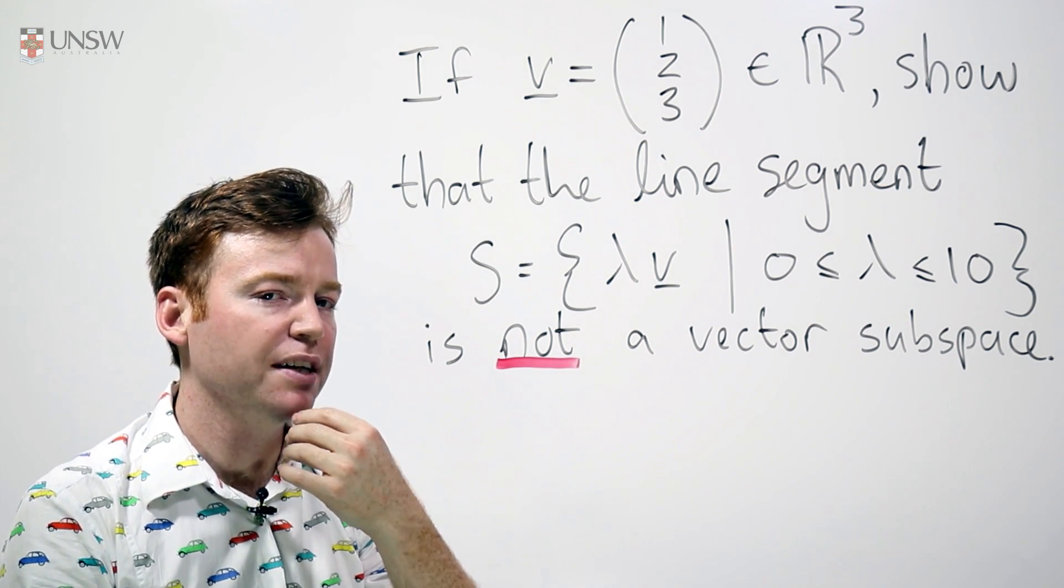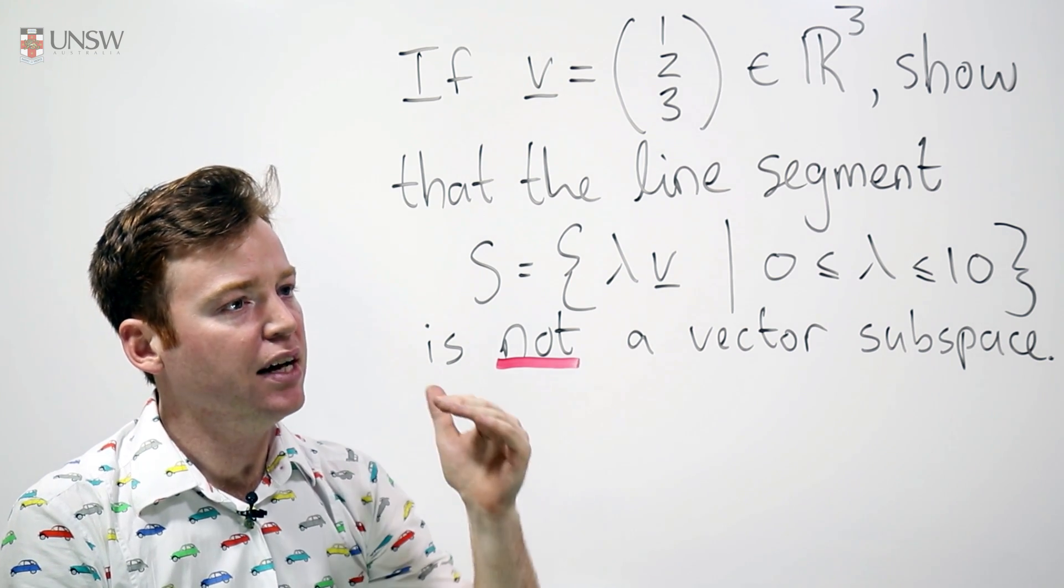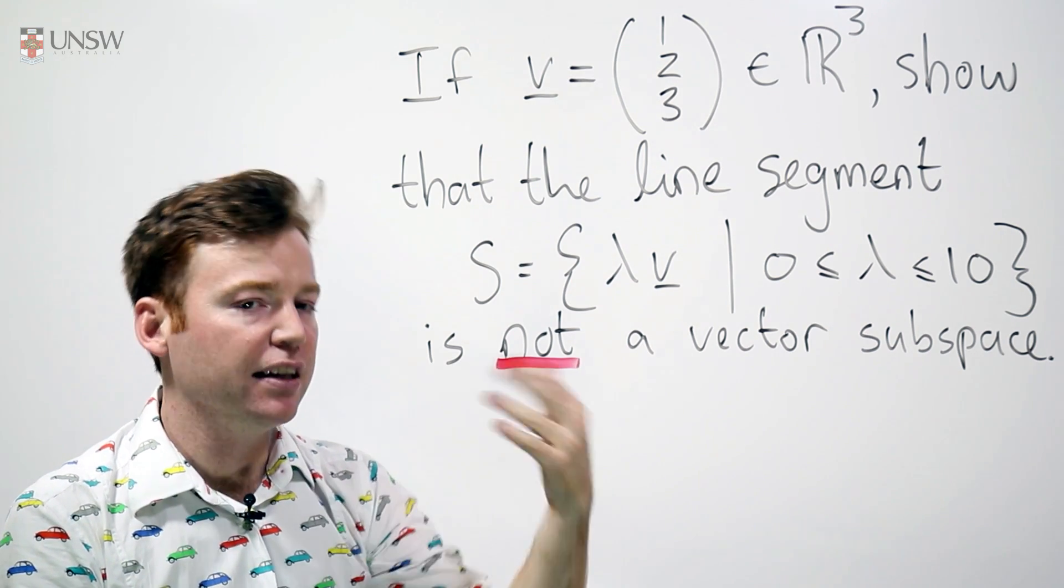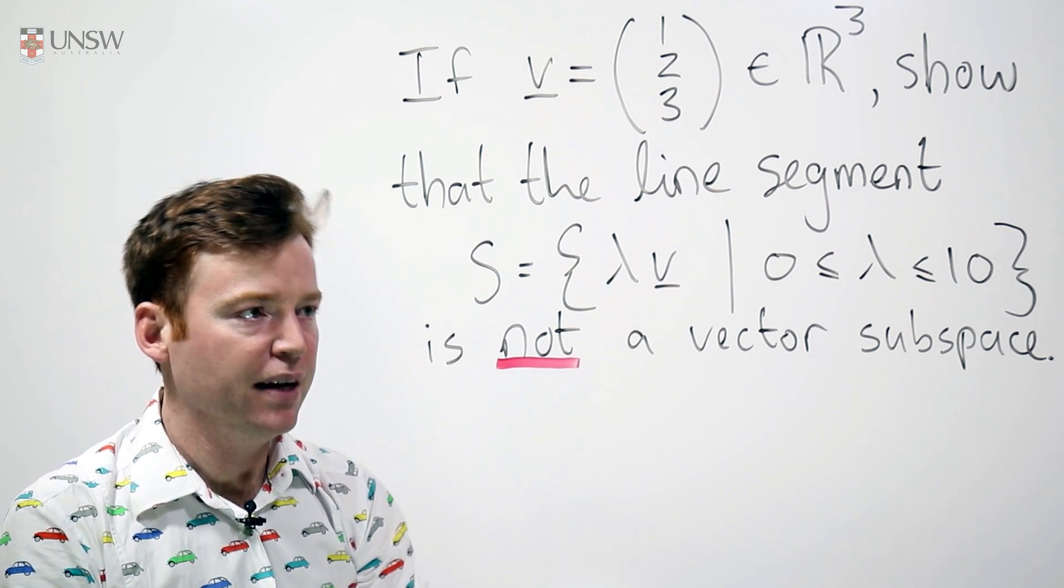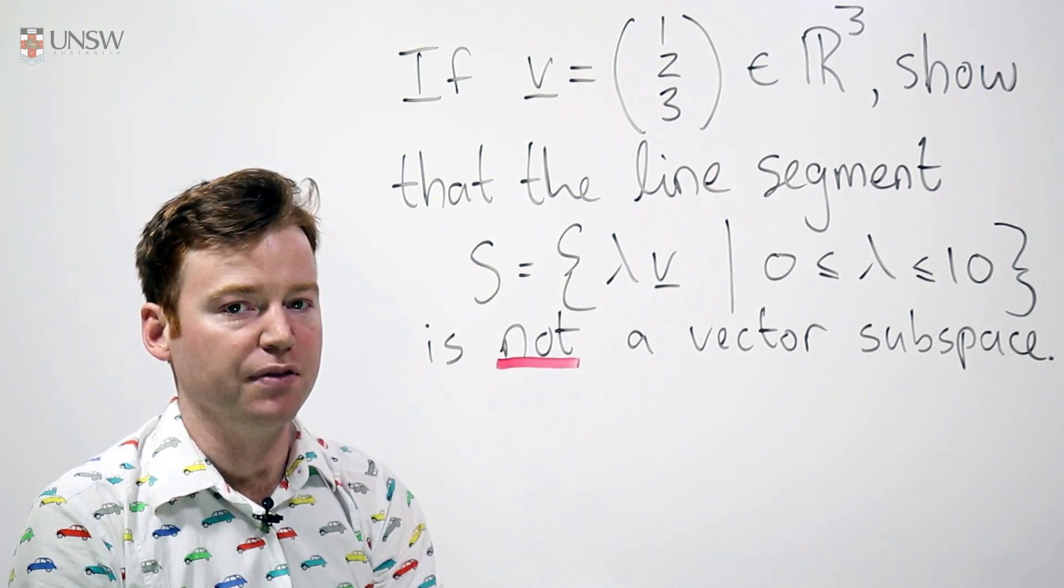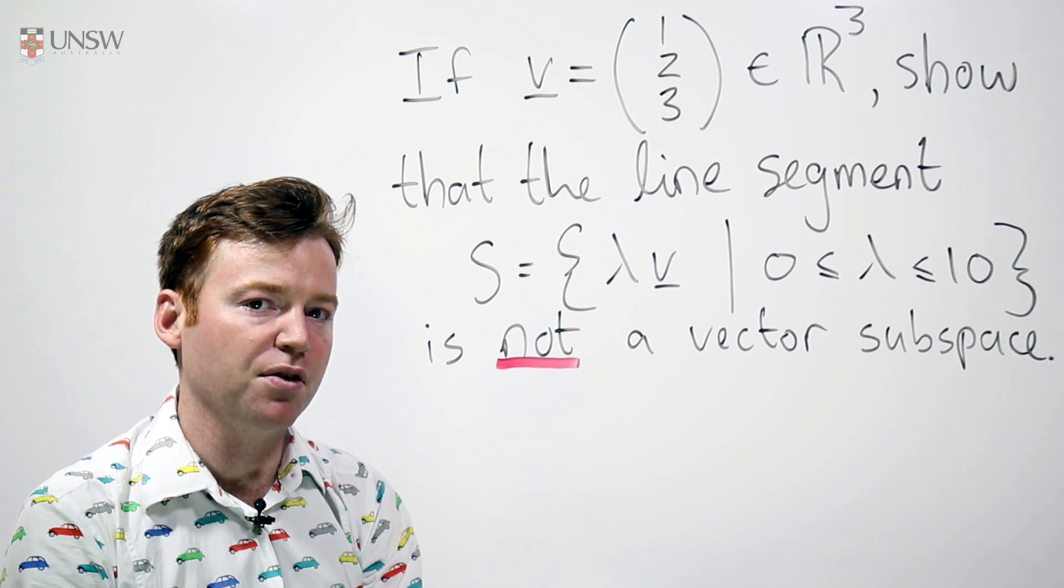When you're showing something is not a vector space, you need to choose one of the vector space axioms and show that the set S violates that axiom. Because S lives in R³, a known vector space,